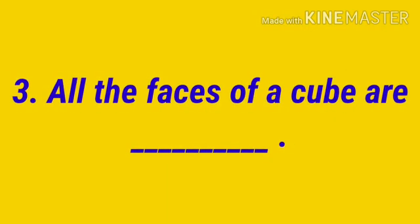Then number 3: All the faces of a cube are dash. Means you have to write the name of the shape of each face of a cube. You know the cube has 6 faces, so each face is having what shape? It is square or rectangle. You have to write the answer.